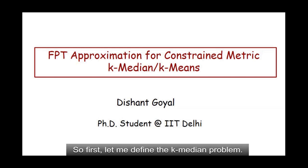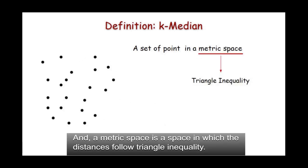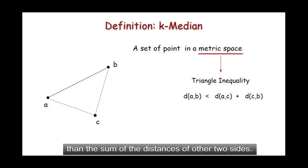So first, let me define the k-median problem. In the k-median problem, we are given a set of points in a metric space, and metric space is a space in which distances follow triangle inequality. So basically, if you take any three points in the space, then the distance from A to B is going to be less than the sum of the distances of other two sides.